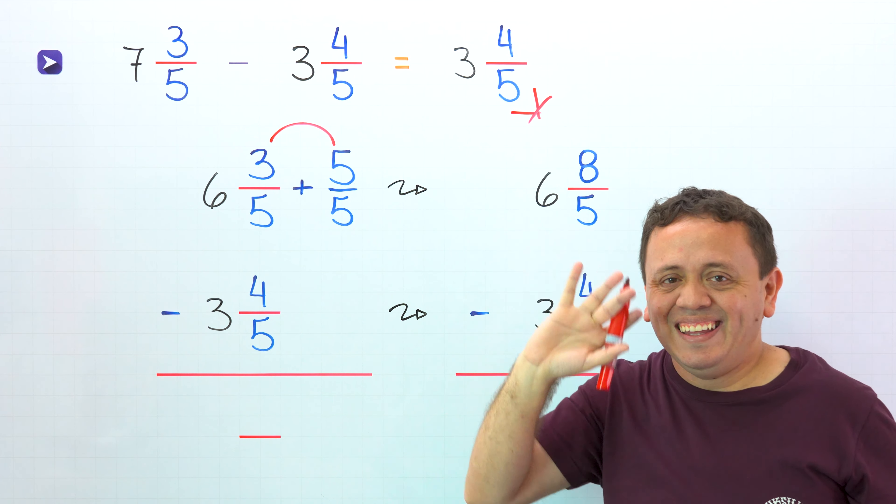We need to subtract these numbers. Pay attention! We'll start by subtracting the fractions. These two fractions have the same denominator, 5. And then 8 minus 4 gives us 4.